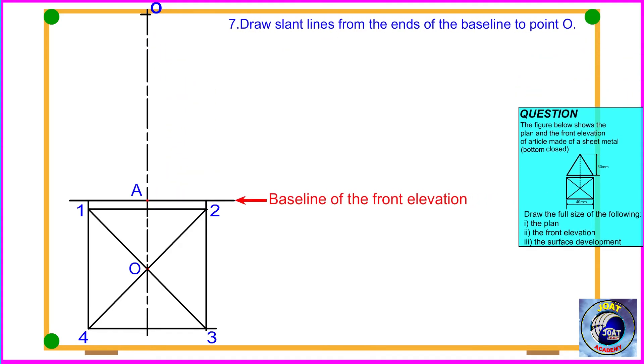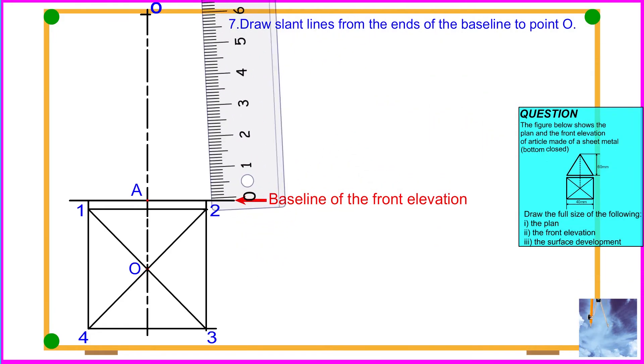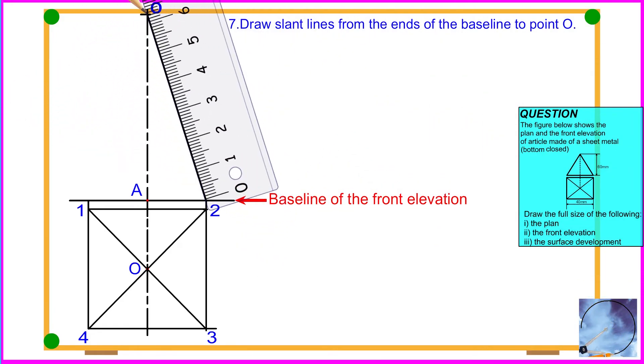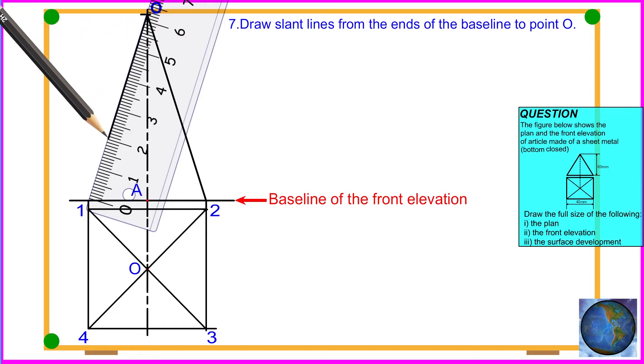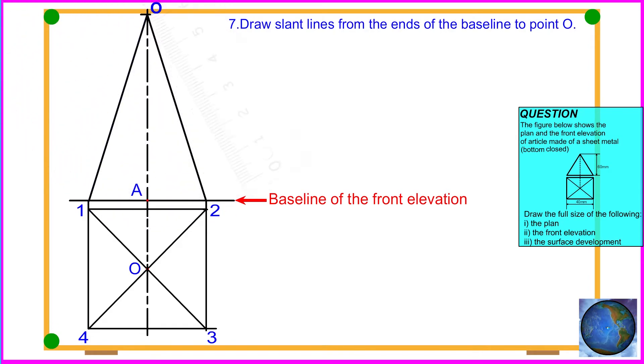Procedure 7: Draw slant lines from the ends of the baseline to point O. Front elevation.